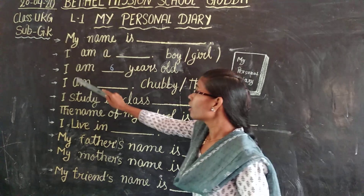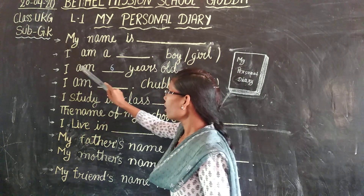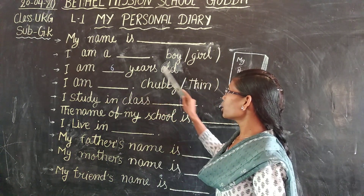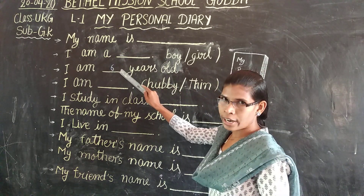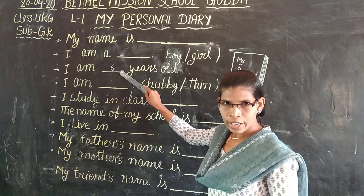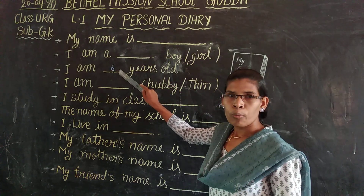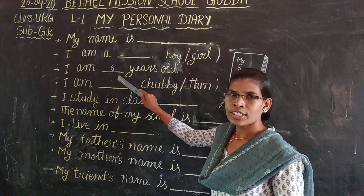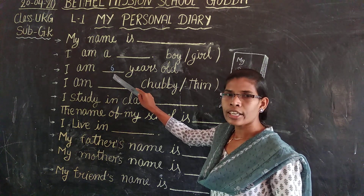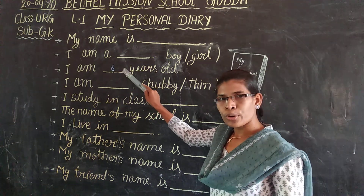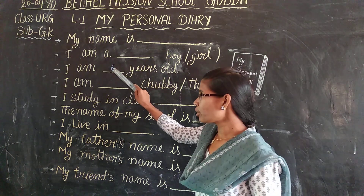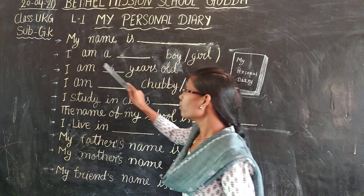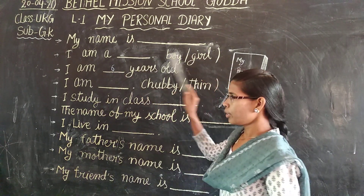Now the third line: I am 6 years old. So here you have to write your age. What is your age? You are 5 years old, 6 years old, 7 years old — whatever your age, you have to write it here. I am 6 years old.